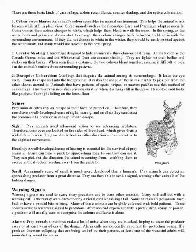Prey animals often rely on escape as their form of protection. Therefore, they must have well-developed senses of sight, hearing, and smell so they can detect the presence of a predator in enough time to escape. Prey animals need all-around vision to see advancing predators; their eyes are located on the sides of their head, which gives them a wide field of vision. They are able to look in either direction and are sensitive to the slightest movements.